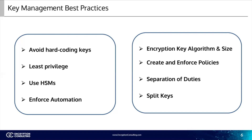Enforce automation. Automation is a widely practiced method of ensuring keys do not go past their crypto period and become overused. Other portions of the key lifecycle can be automated as well, like creating new keys, backing up the keys regularly, distributing keys, revoking them, and destroying them.